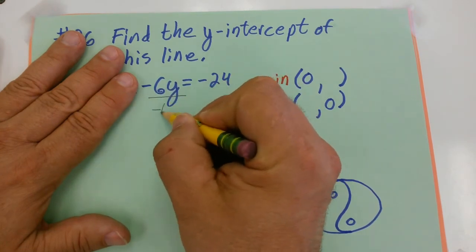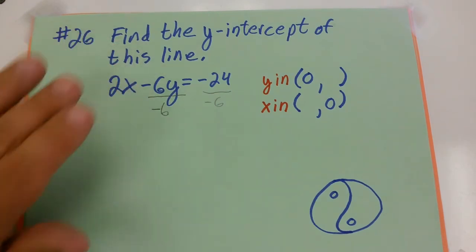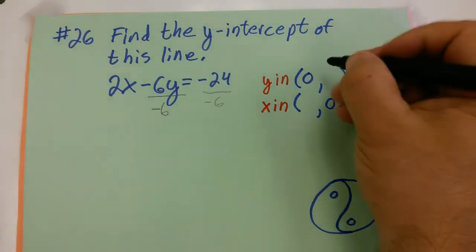Negative 6y equals negative 24. If I solve this for y, I divide both sides by negative 6, which gives me (0, 4). My y-intercept would be (0, 4).